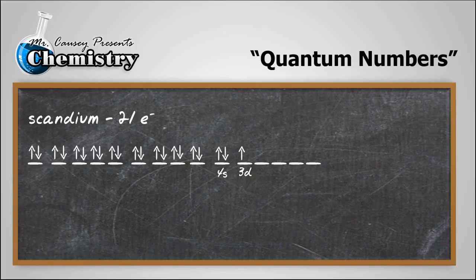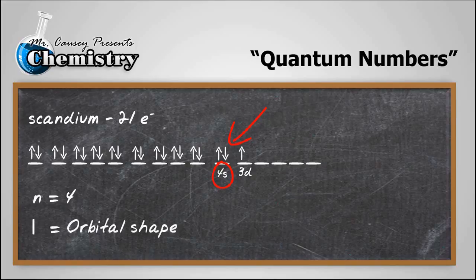And we want to do the quantum numbers for number 20. Not number 21, but number 20. Okay, so number 20 is that one right there. And we know that n is the first quantum number, and that stands for the energy level. And you'll notice that it's in the fourth energy level. And then l is for the orbital shape. And we'll see that this is in the S orbital, 4S orbital, which means that would be zero. Its numerical value is zero.